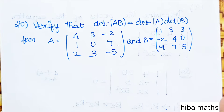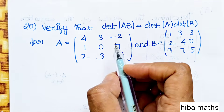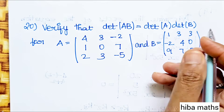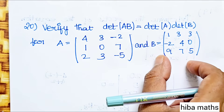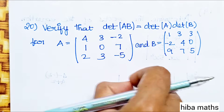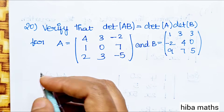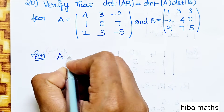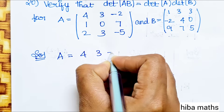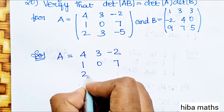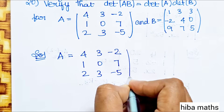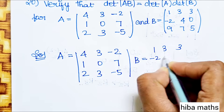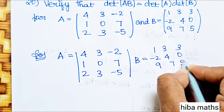Next, Question 20: verify that det(AB) = det(A) × det(B). We can solve by showing the determinant value is consistent. Given: A = [[4,3,−2],[1,0,7],[2,3,−5]] and B = [[1,3,3],[−2,4,0],[9,7,5]].